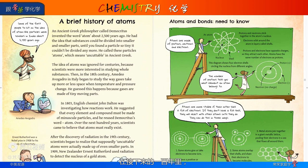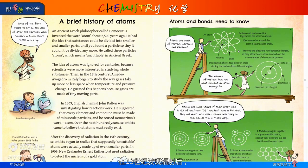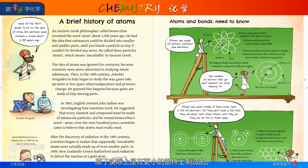Over the next hundred years, scientists came to believe that atoms must really exist. After the discovery of radiation in the 19th century, scientists began to realize that supposedly uncuttable atoms were actually made up of even smaller parts.